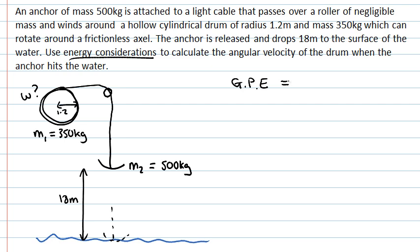So at the bottom, when it hits the surface of the water, there's going to be a certain amount of kinetic energy that's linear from the anchor dropping. And there's also going to be kinetic energy in the drum, which is rotating. So we have a linear and a rotational component to the kinetic energy.